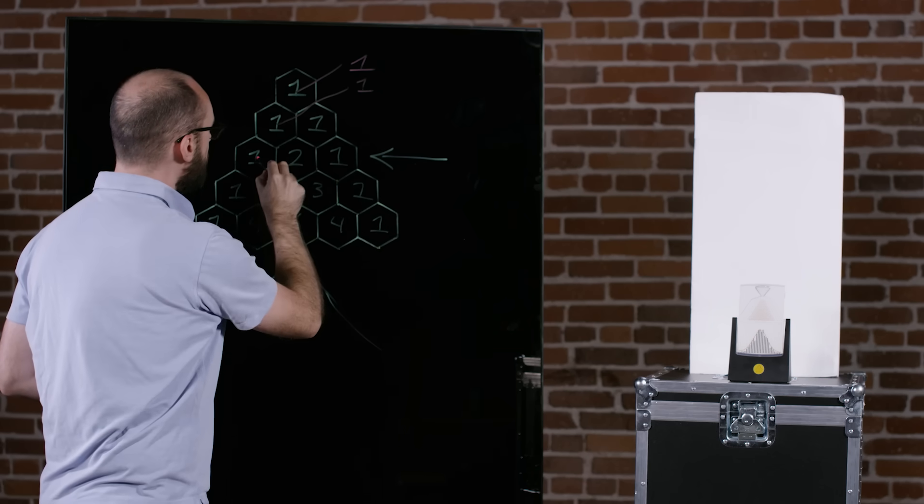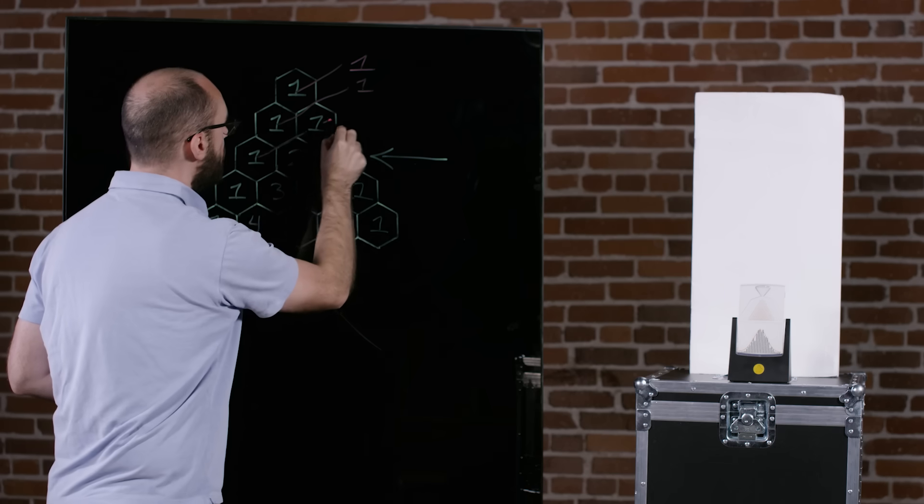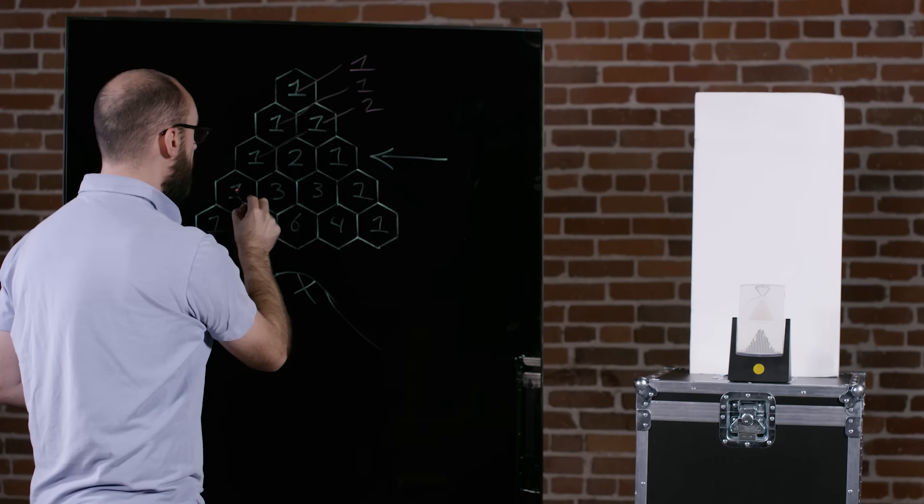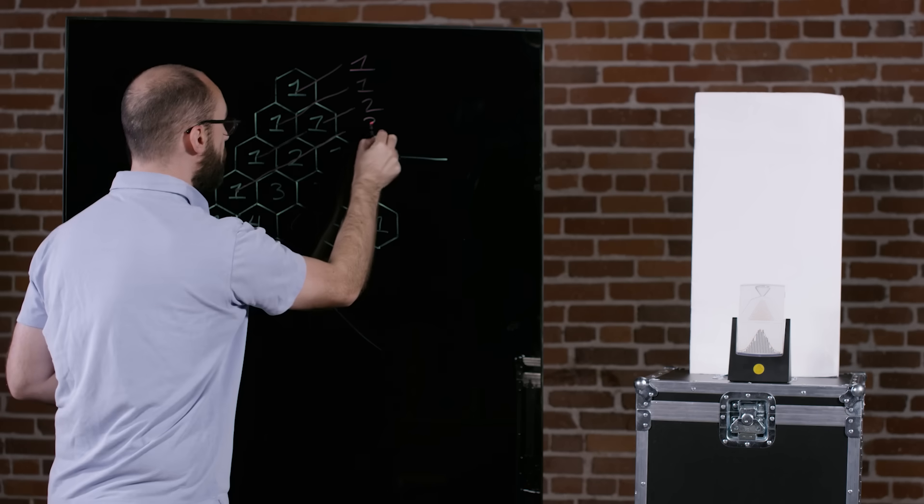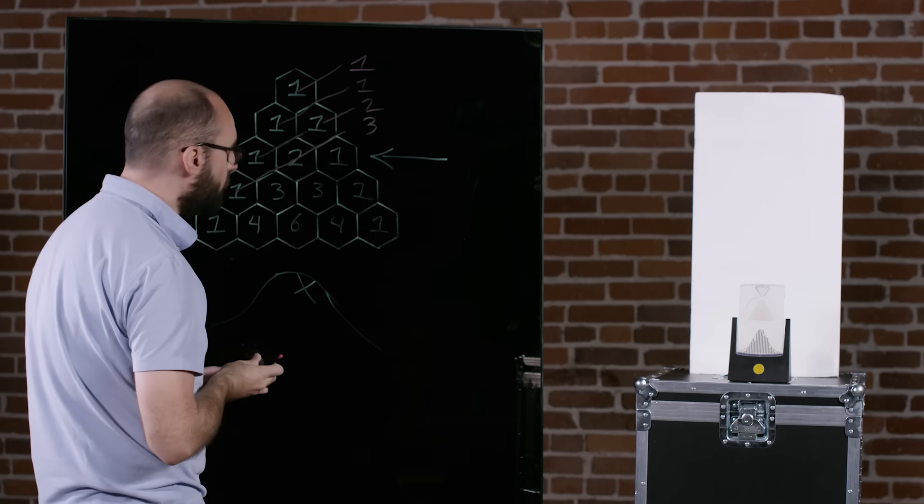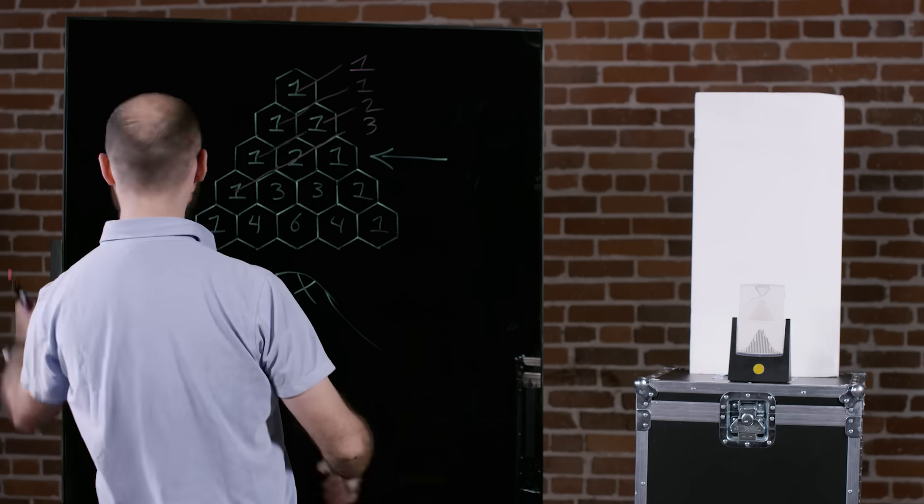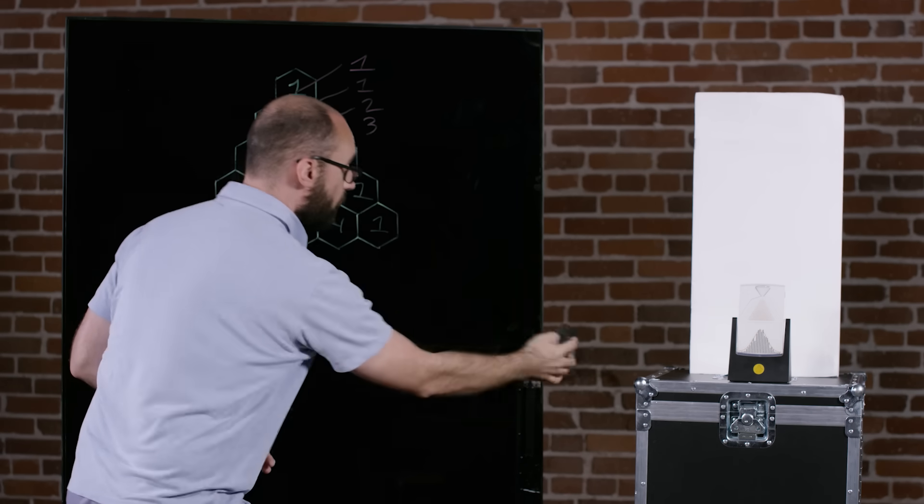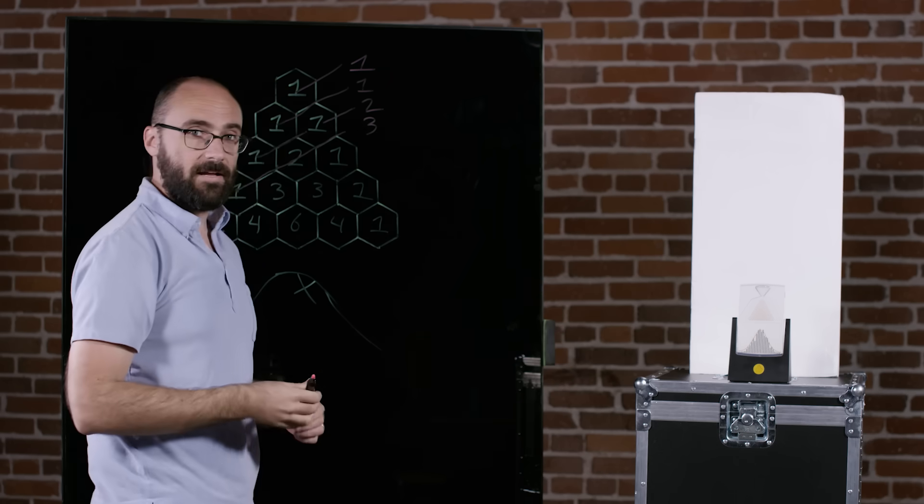If I go from this one, I have a one and a one, which sums to two. If I start here and I diagonally go out, I have one plus two, which is three. And I'm going to erase that arrow because it's in my way.